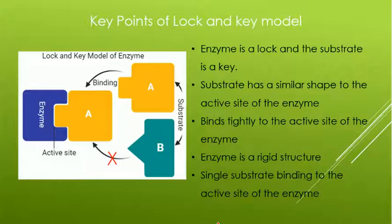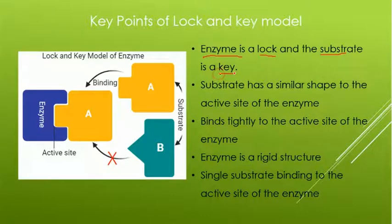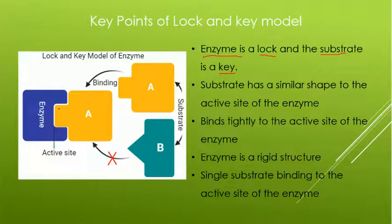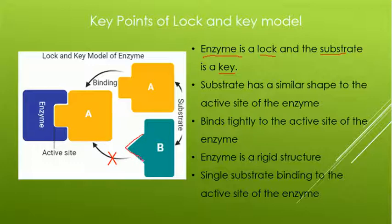Similarly, one specific substrate can bind to one specific enzyme. This model is successful in clarifying the substrate specificity of enzymes. According to this model, the enzyme is a lock while the substrate is a key. This substrate binds at the active site; however, substrate B cannot bind with the enzyme because the shape of substrate B is not compatible with the enzyme.